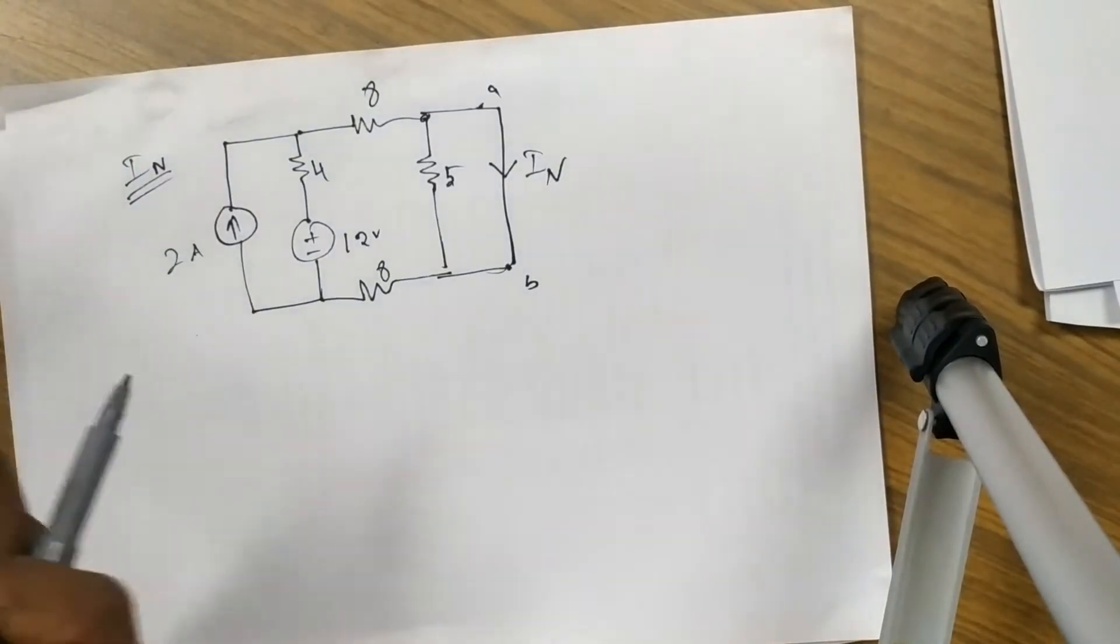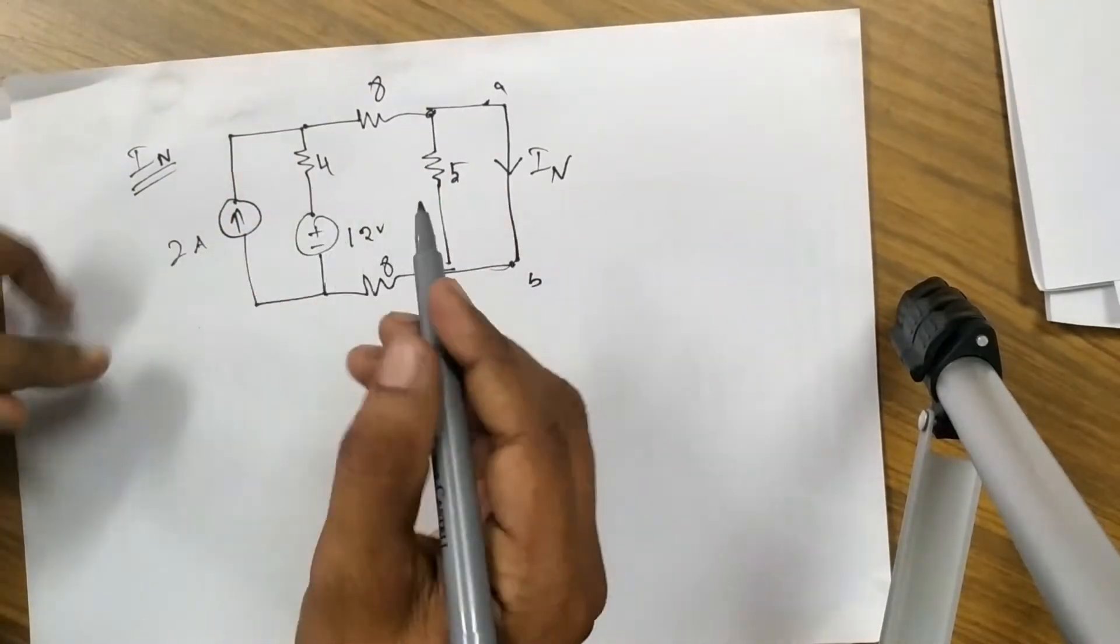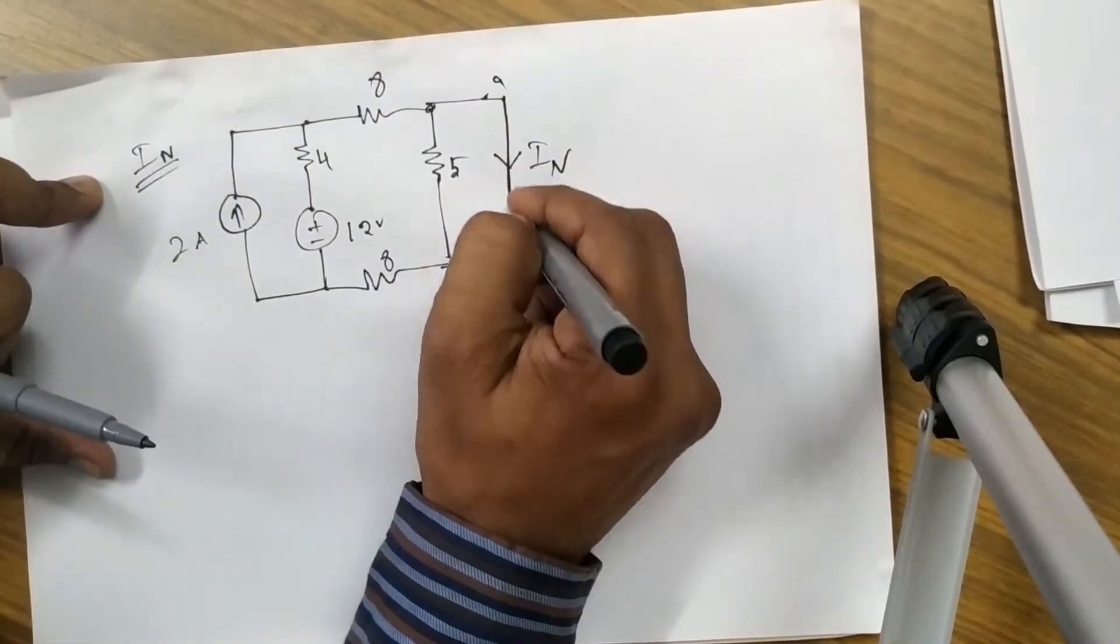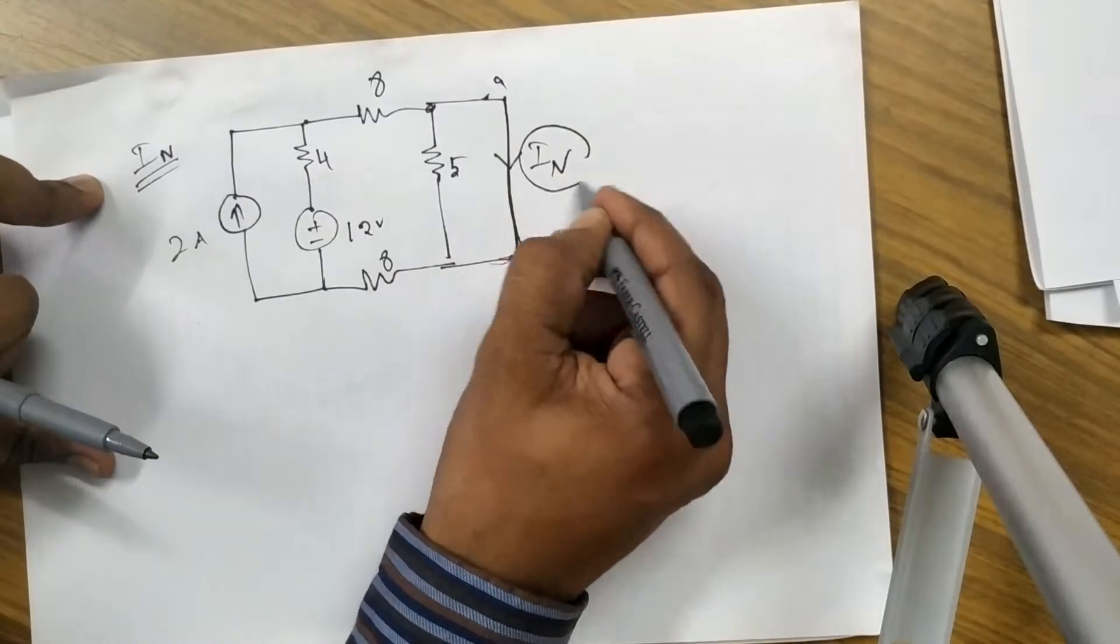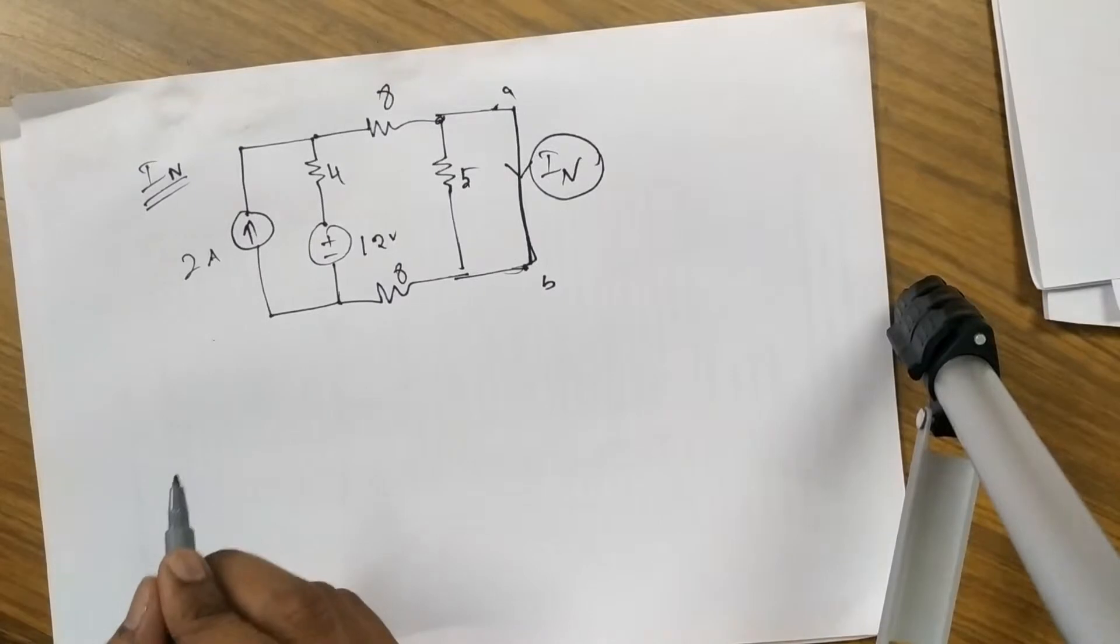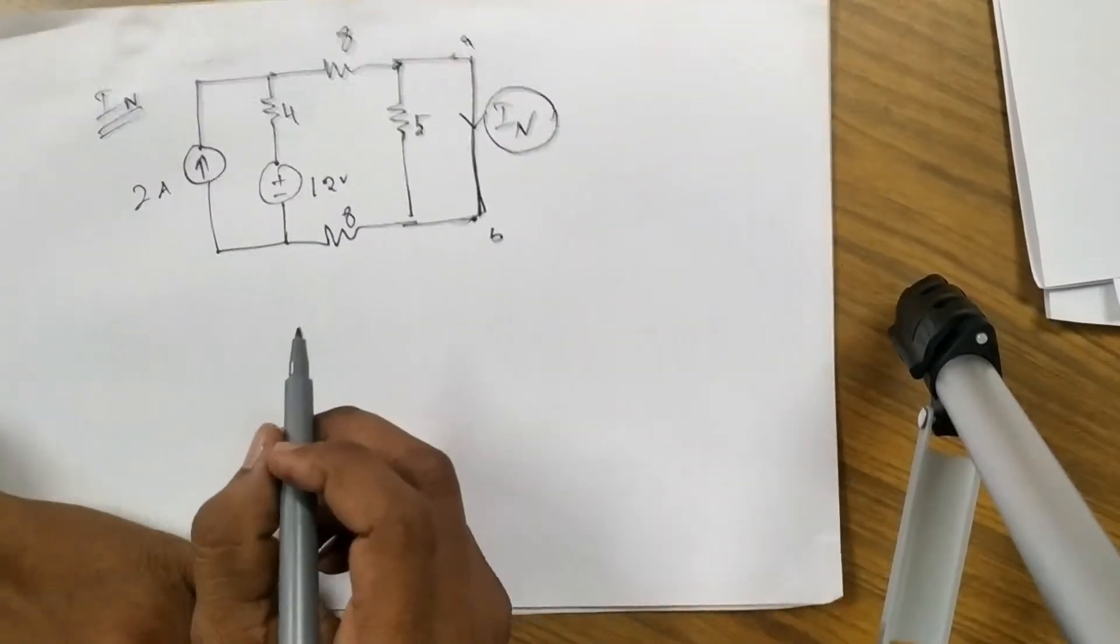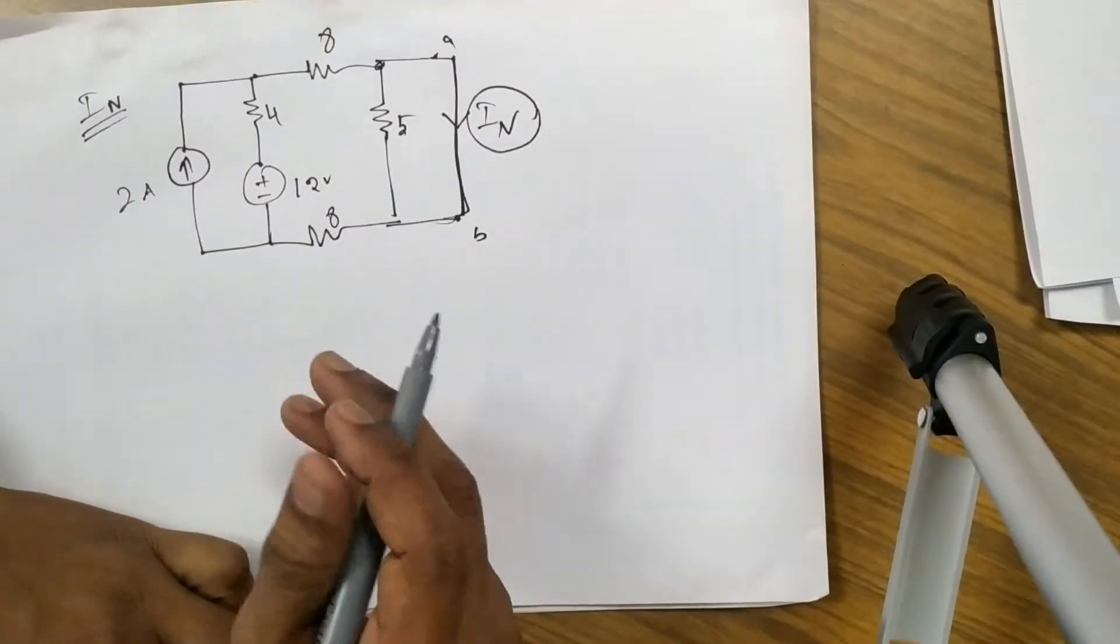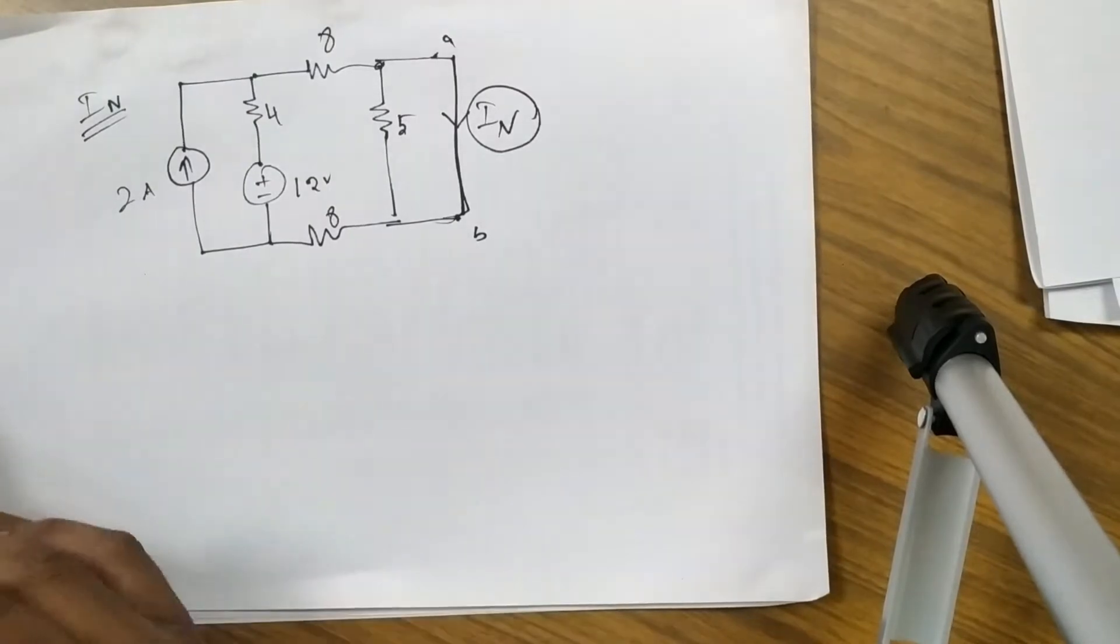In V Thevenin, we open-circuited and we found Vth, now we short-circuited and we are finding what is In value over here. As if we have an open-circuit terminal that resistance had no value in the first problem of Thevenin's theorem we discussed.